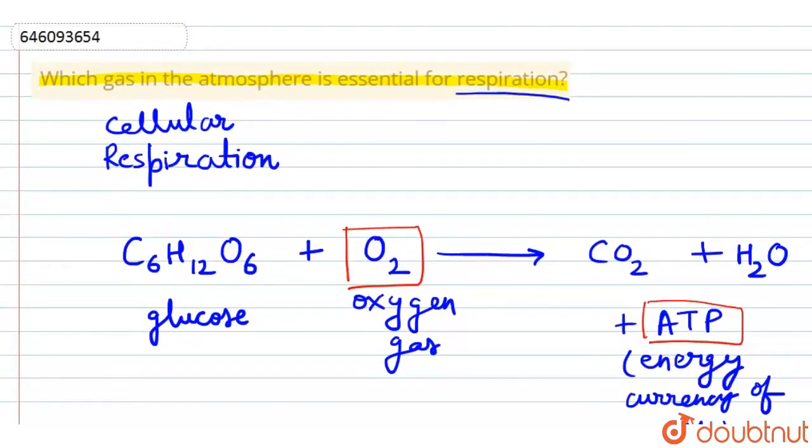Oxygen gas जो कि है component of air. Atmosphere का जो component. Atmosphere is the layer of air, layer of air around earth.